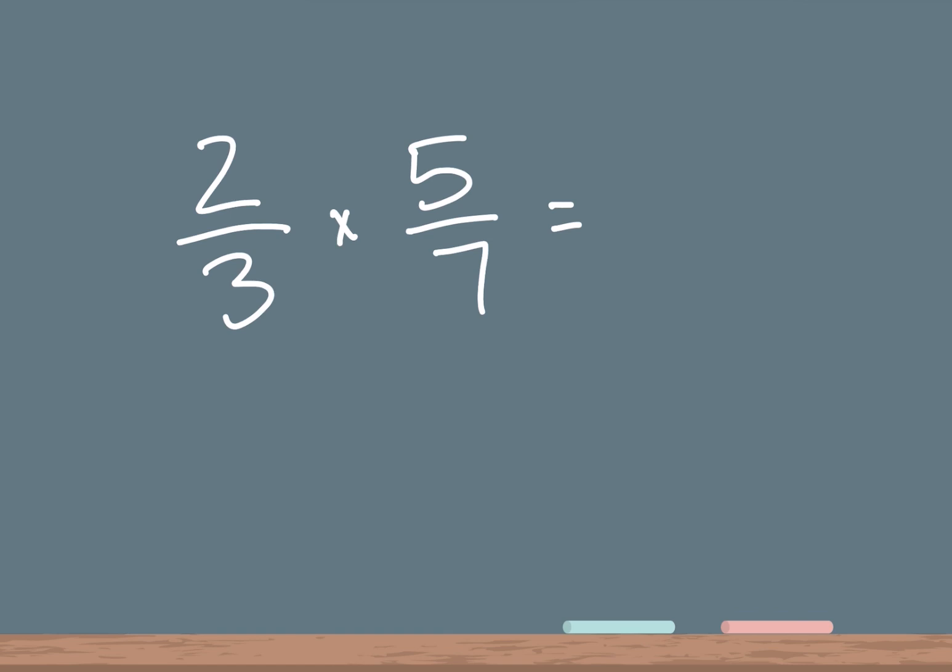So again, our first step is to multiply the top number. So 2 times 5 is 10. And then 3 times 7 is 21.